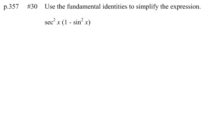Page 357, number 30. Use the fundamental identities to simplify the expression: secant squared of x times 1 minus the sine squared of x.